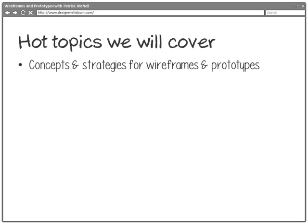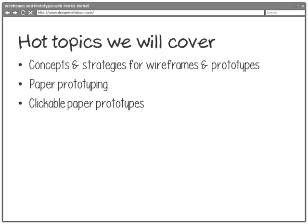Along the way we cover a number of topics. Obviously, concepts and strategies for using wireframes and prototypes — we talk strategically about how they can be used in the lifecycle of our product and how we can use them to facilitate ideation, brainstorming, and usability testing. We also talk about paper prototyping — actually using printed paper prototypes instead of digital interactive ones. We look at creating clickable paper prototypes so you can turn sketches into clickable prototypes in a really easy way, and we look at some tools and methods for doing that.